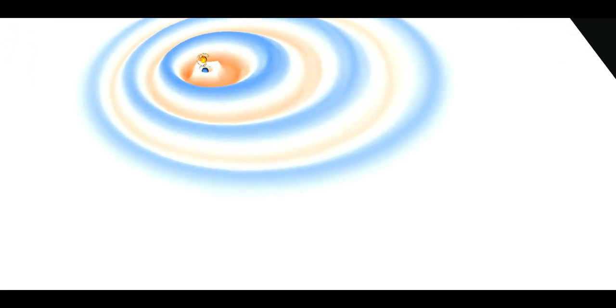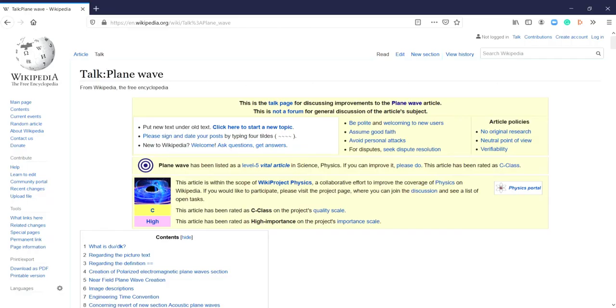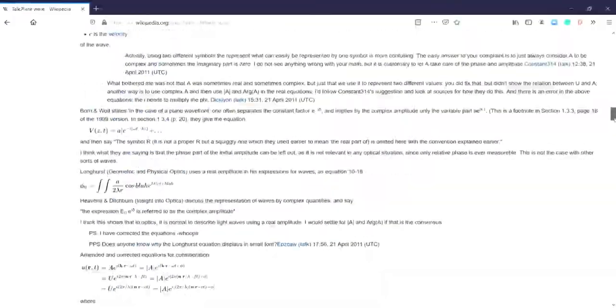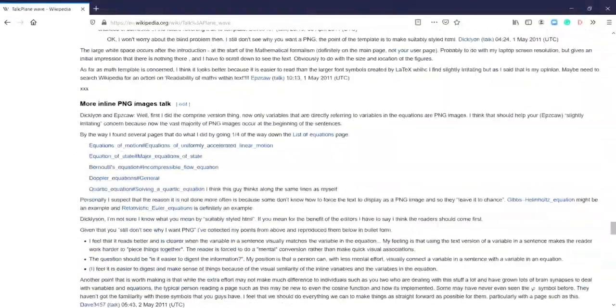Do you notice that the waves generated start to behave like lines far from the center? If we consider a three-dimensional world, those lines are indeed planes that propagate in a certain direction. And for this reason they are called plane waves. Plane waves are very important in the description of a lot of electromagnetic phenomena.